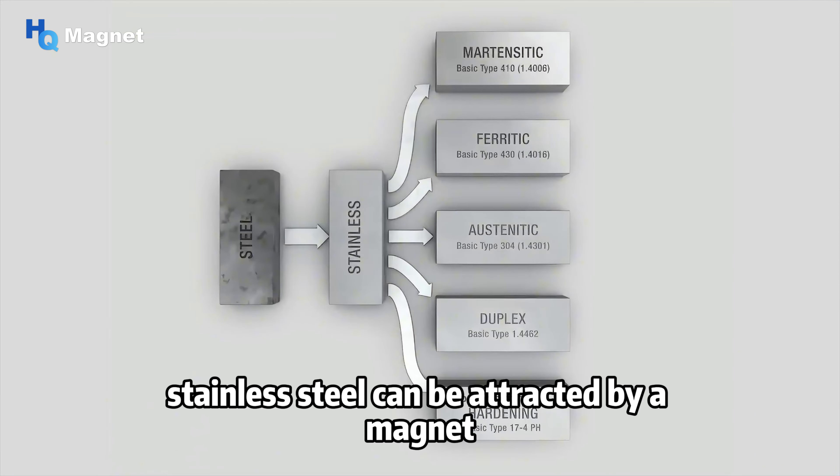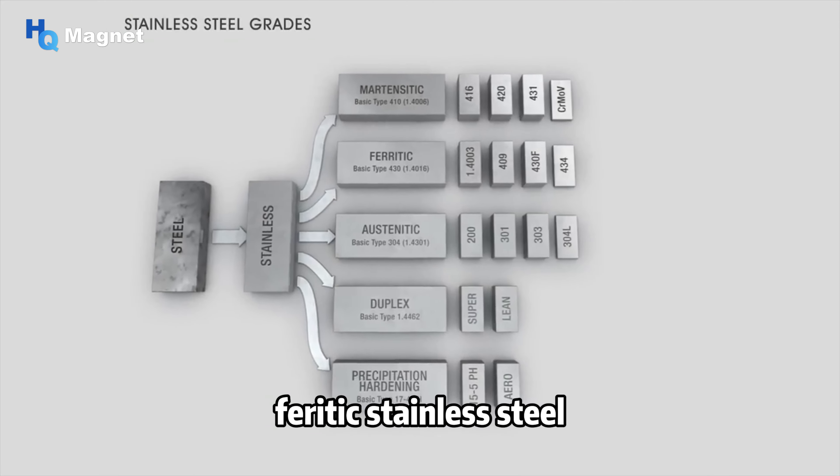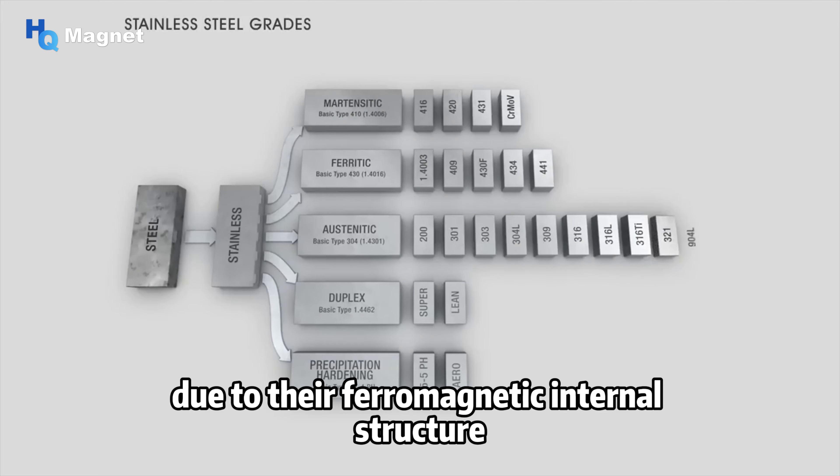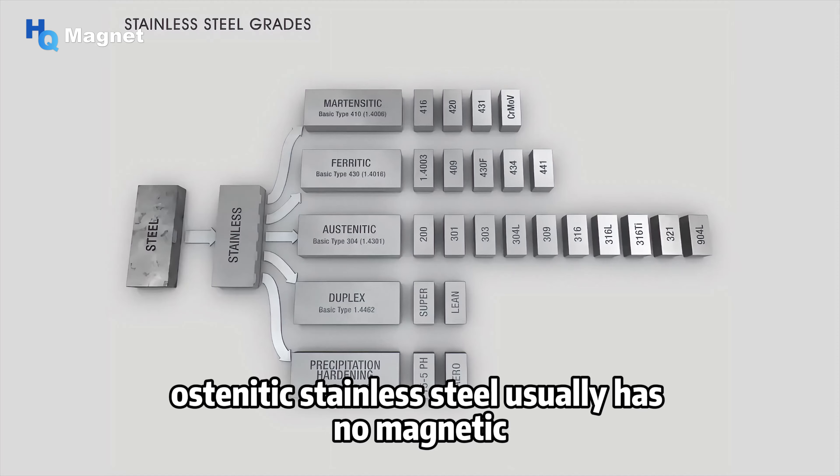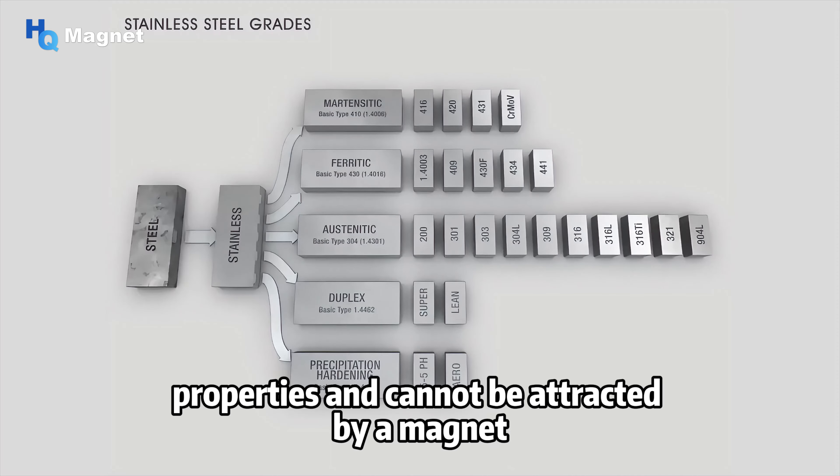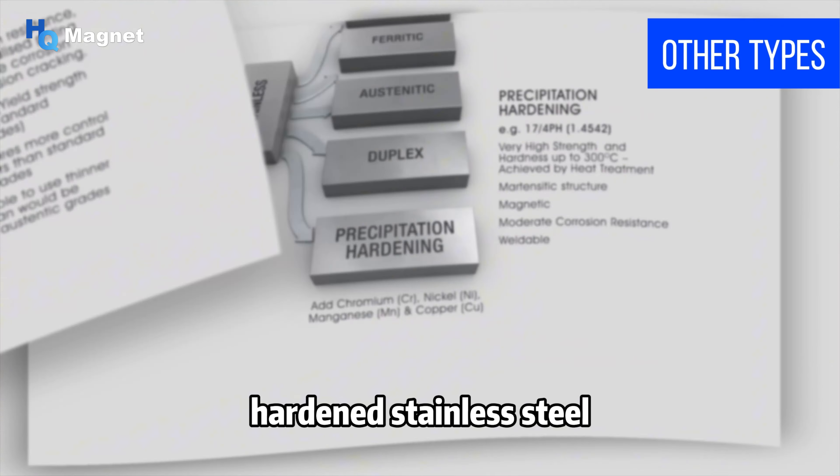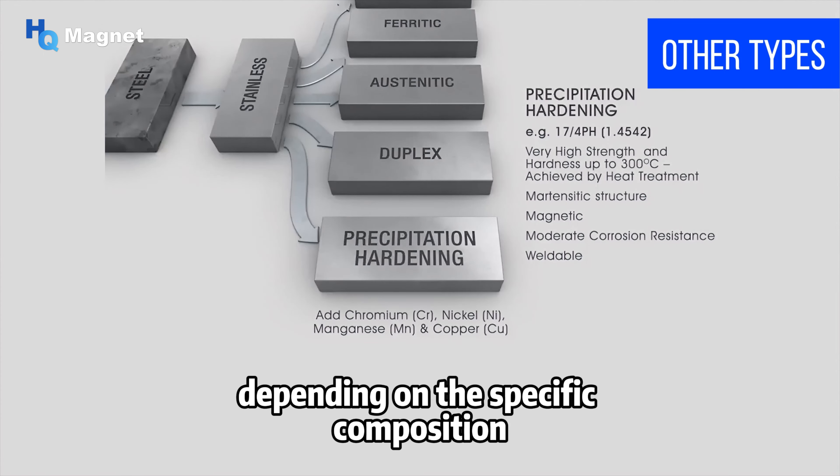To sum up, whether stainless steel can be attracted by a magnet mainly depends on its type. Ferritic stainless steel and martensitic stainless steel can be attracted by a magnet due to their ferromagnetic internal structure. However, austenitic stainless steel usually has no magnetic properties and cannot be attracted by a magnet. For other types of stainless steel, such as austenitic-ferritic duplex stainless steel and precipitation-hardened stainless steel, their magnetic properties may vary depending on the specific composition and processing techniques.